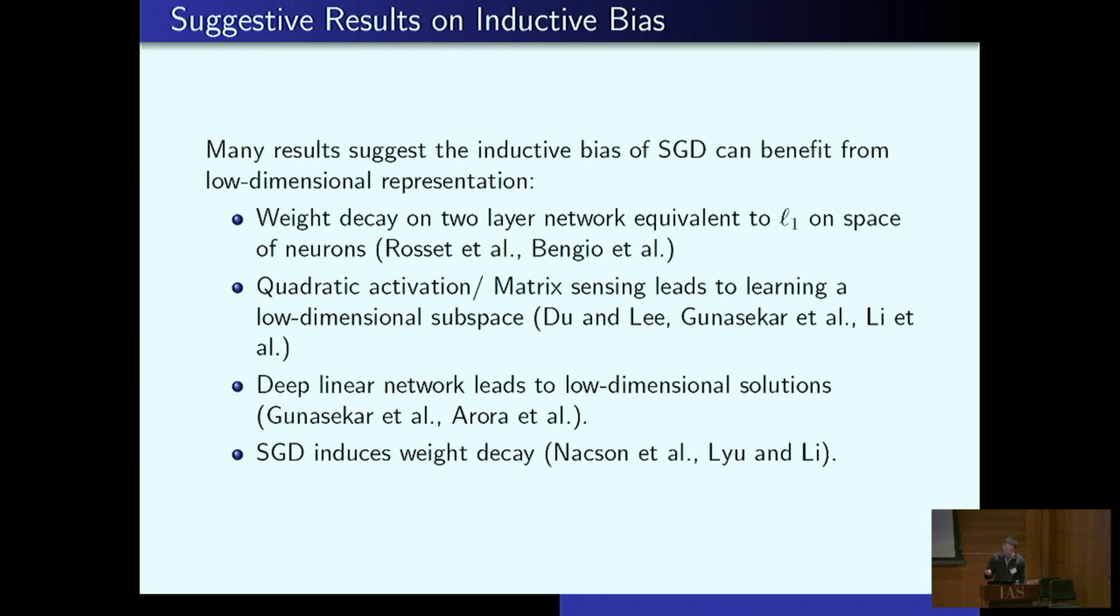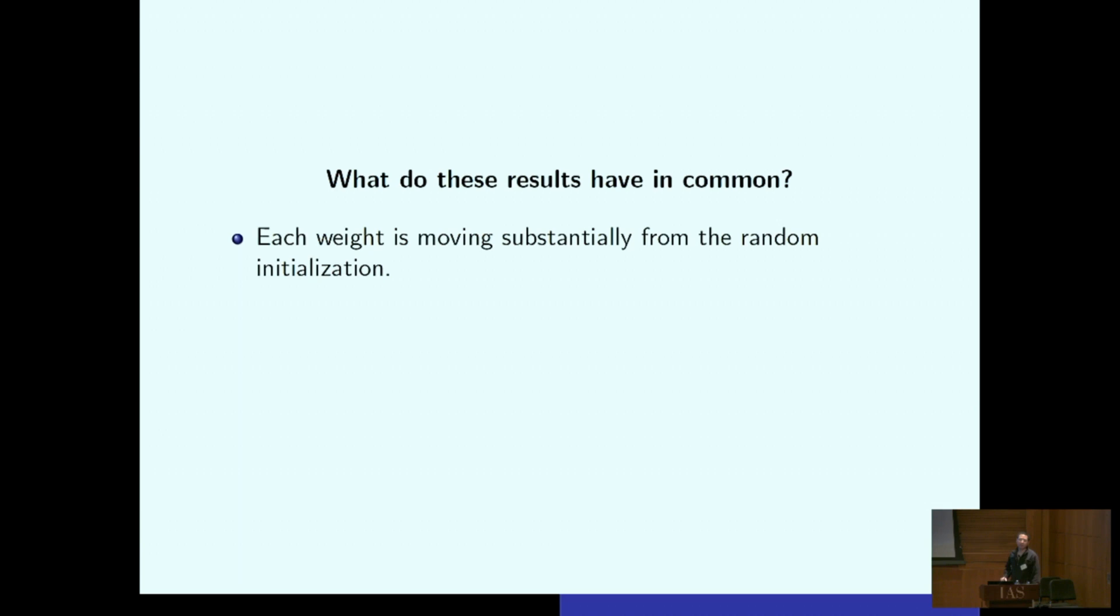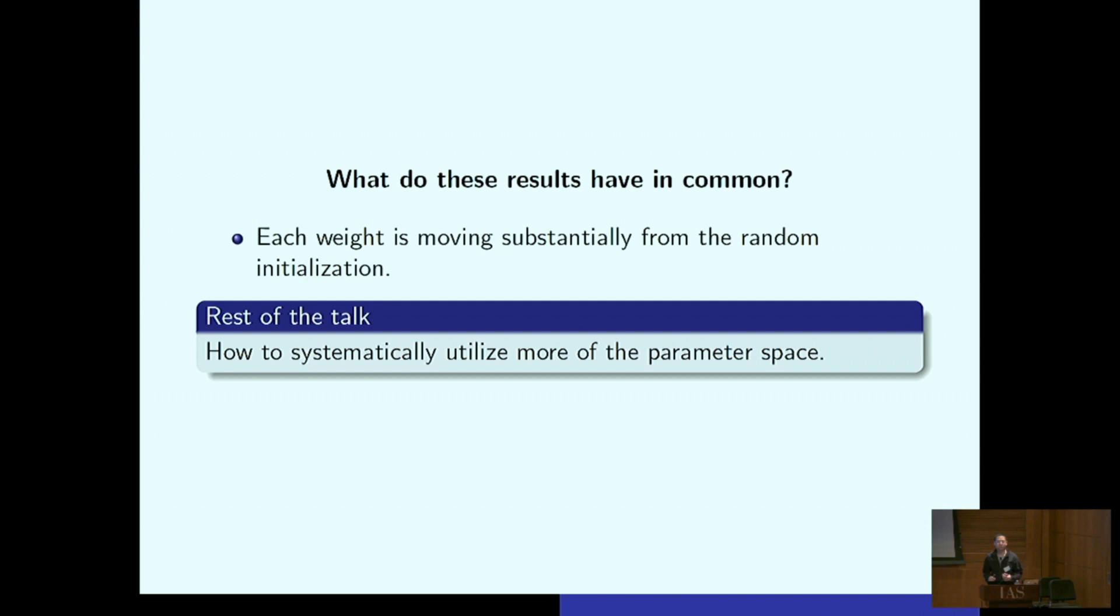So what is common in all of these sort of suggestive results? They're all asymptotic and none of these are polynomial time, except the quadratic activation case. You have to move substantially from random initialization. All of these require you to essentially kind of forget where you initialized and move like an order one away. Assuming my neurons are initialized order one, I need to move also order one. So the rest of this talk is how to systematically utilize more of the parameter space. And let me tell you how I do this.